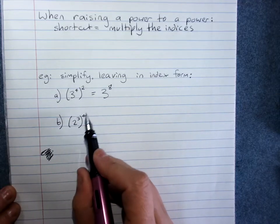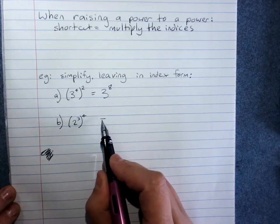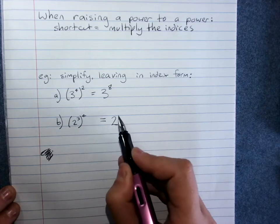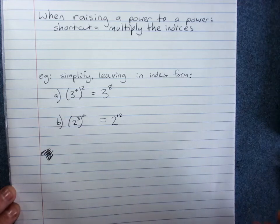2 cubed raised to the power of 4, that's 2 and I multiply the indices, 3 times 4 is 12.